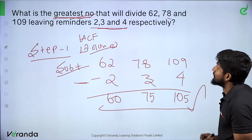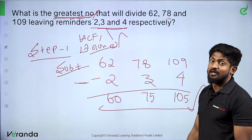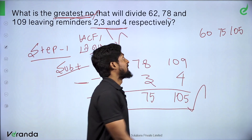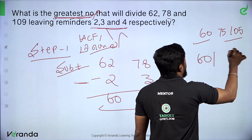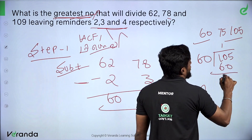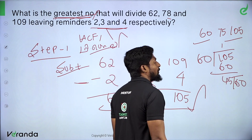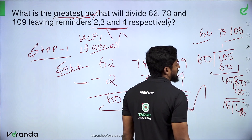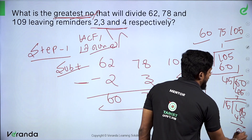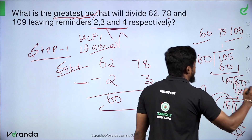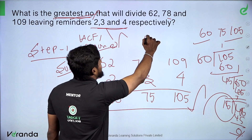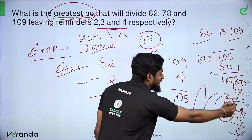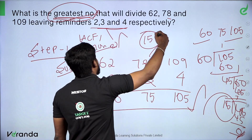What we call this is the Greatest Number — HCF. We take 60 and 105. Dividing: 105 by 60 gives 1 remainder 45. Then 60 by 45 gives 1 remainder 15. Then 45 by 15 gives 3 remainder 0. When we divide by 15 and the remainder is 0, this sum's HCF is 15. The Greatest Number for this sum is 15.